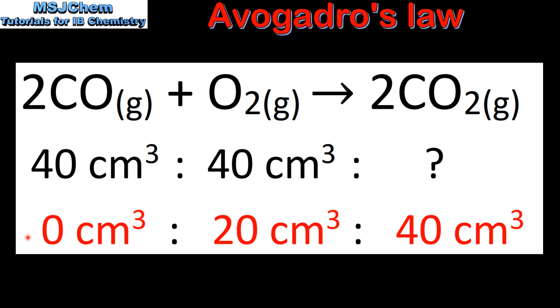So the composition of the final mixture will be 0 cm³ of carbon monoxide because it's the limiting reactant, 20 cm³ of oxygen, and 40 cm³ of carbon dioxide.